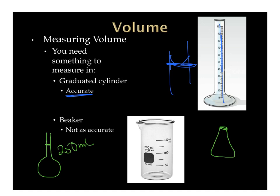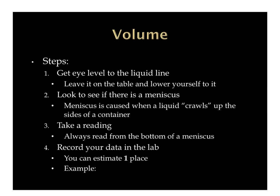A beaker is useful when you need approximately a certain volume — say about 100 milliliters — but for an exact volume in a reaction you'd pour it into a graduated cylinder. The beaker isn't quite as accurate, because it has far fewer markings. From one mark to the next might span 50 or even 100 units, so you'd need many more marks to be precise. So the beaker is not quite as accurate.